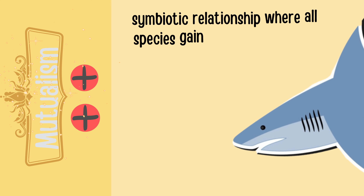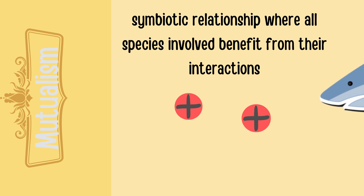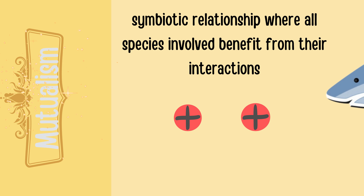Let's start off with mutualism. Mutualism is a symbiotic relationship where all species gain benefits from their interactions. This type of symbiosis is basically a one-to-one relation where all the interactors gain benefits. So for this type of symbiosis, we use the plus and plus symbol, because all the interactors gain benefits from mutualism. Make sure to remember: plus and plus is mutualism.